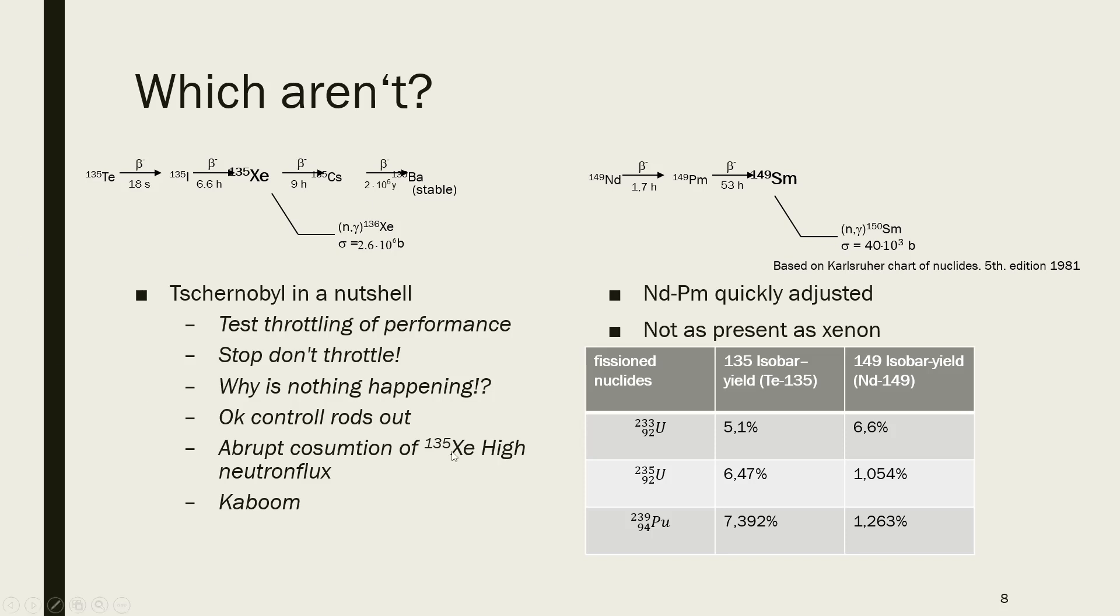If you all add them up, you will get to a number of greater than 200% because you make one atom, you split it, and then you have on average two new nuclei. So the fission products, and you basically end up with a fission yield of above 200%. And as you can see, the neodymium, so the 149 isobar yield, which eventually produces your neodymium, which then can capture neutrons, it's just 1% of all your fission products. So it's not as quickly.